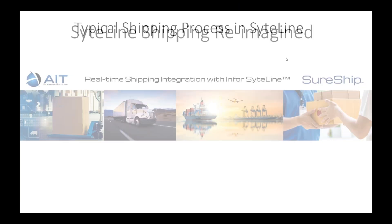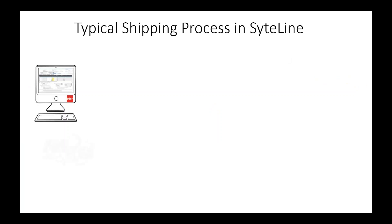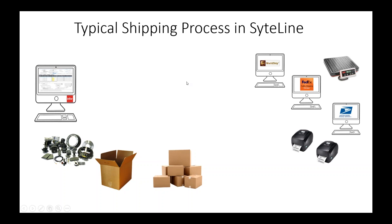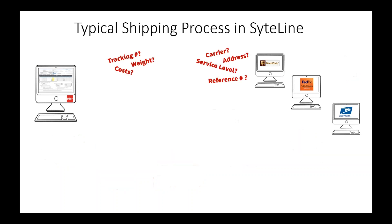Most of you know how Sightline shipping works. Whether using pick, pack and ship or customer orders, you ship your parts out of Sightline, which does your inventory transaction and cost of goods transactions. Then you do the physical shipping. Most customers have shipping tools in the warehouse — a WorldShip terminal, FedEx station, scales, printers — but they're really two separate applications.